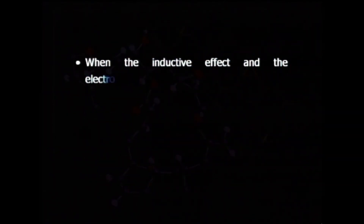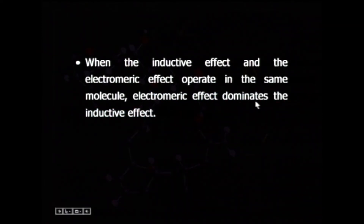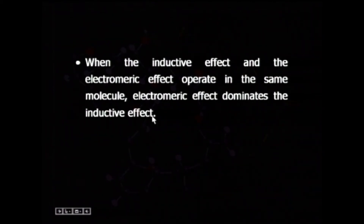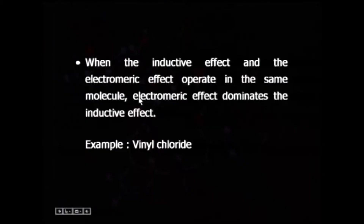When both inductive effect and electromeric effect are present in the same molecule, the electromeric effect is considered to be dominating over the inductive effect. For example, in the case of vinyl chloride, the direction of dipole movement is decided on the basis of the electromeric effect.